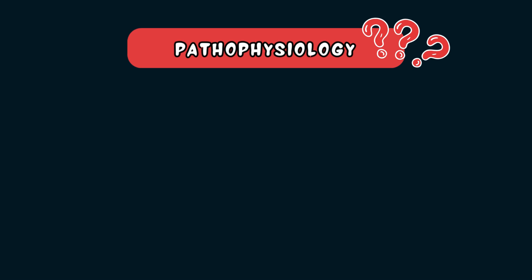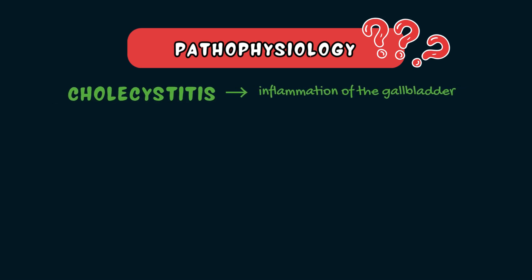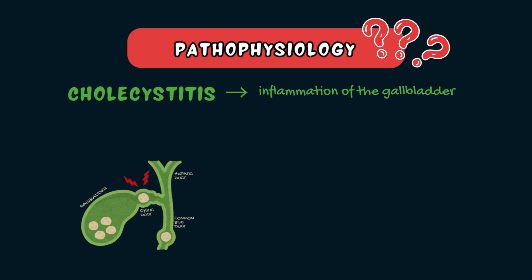Acute cholecystitis refers to inflammation of the gallbladder. In 95% of cases, this inflammation is caused by a blockage of the cystic duct from a gallstone, preventing the gallbladder from draining. This leads to the buildup of bile in the gallbladder, which then increases the intraluminal pressure, leading to inflammation and a possible secondary bacterial infection.